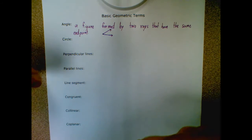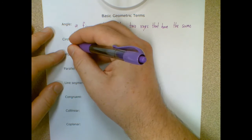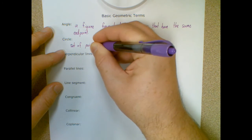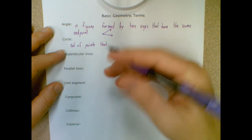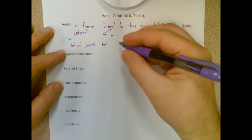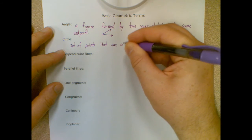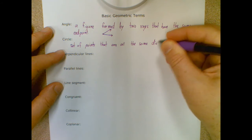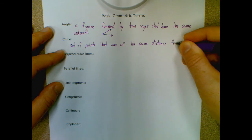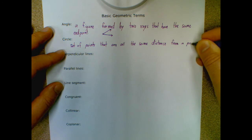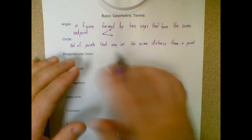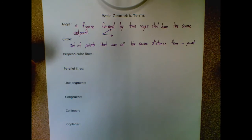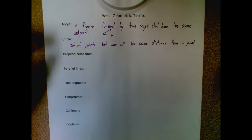A circle — I'm sure you're more familiar with this one. A circle is a set of points that are equidistant, or the same distance, from a point. You get that round shape from circles by the fact that they're all the same distance away from a single point, which is called the center.